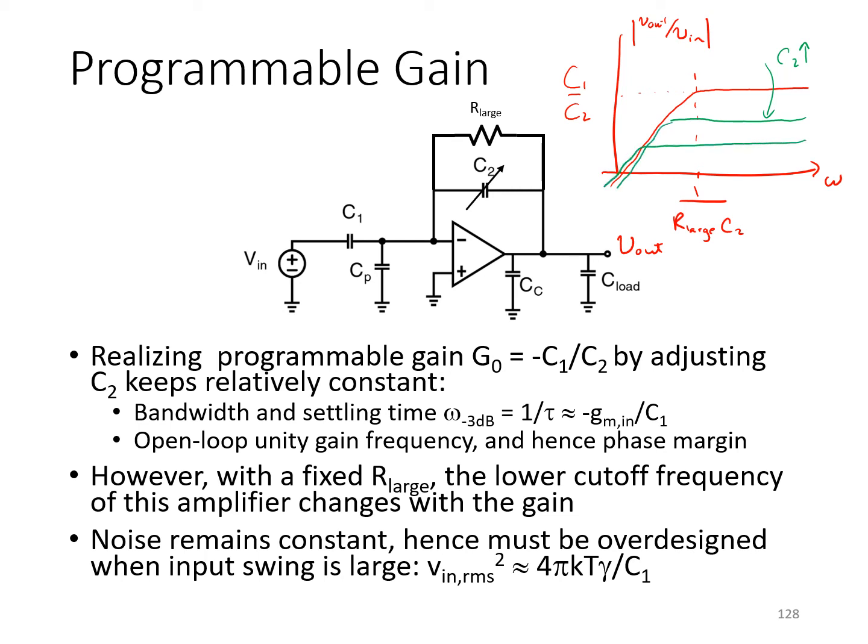So, you can realize a family of curves like this. In some applications, this may be a drawback. If you want to maintain a constant lower cutoff frequency, you're not going to do that if you're varying C2 and keeping everything else constant.